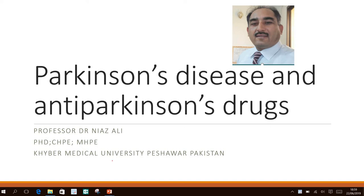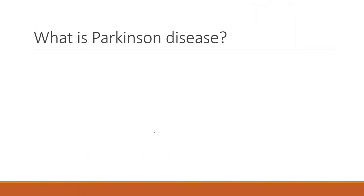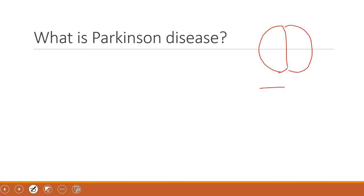Today we will be talking about anti-Parkinsonism drugs and the mechanism underlying Parkinsonism. At the level of the central nervous system there is the brain with the right hemisphere and the left hemisphere. What is important to understand is that there is a balance between excitatory neurons and inhibitory neurons.